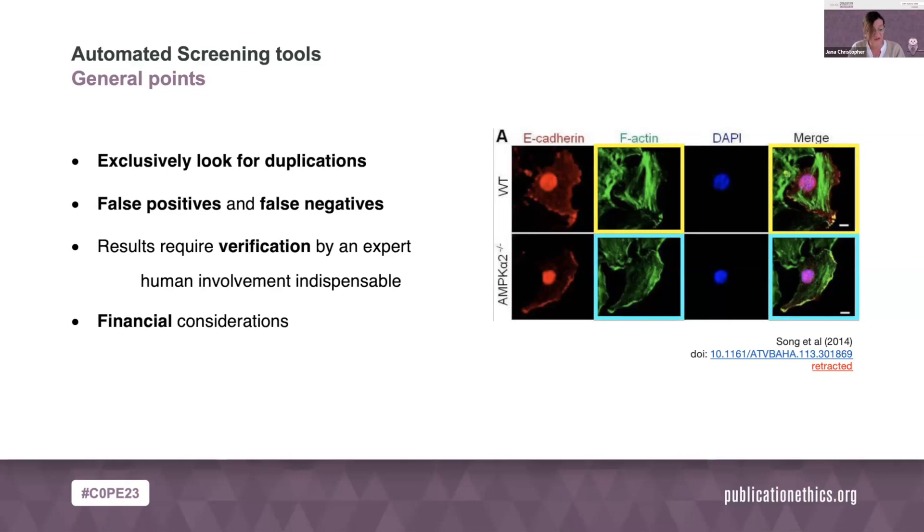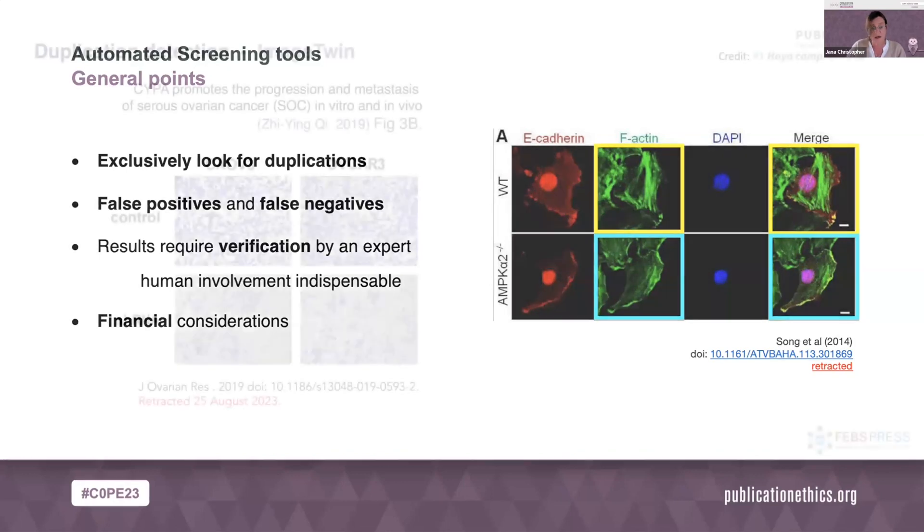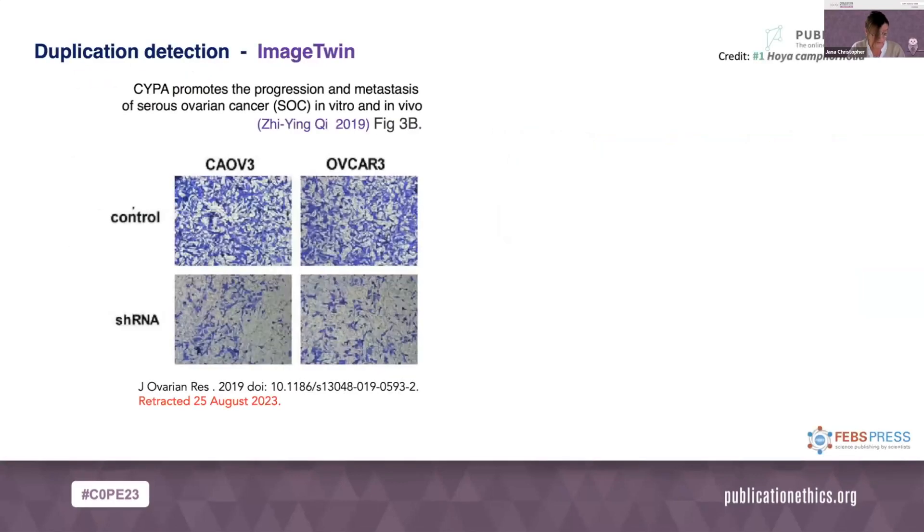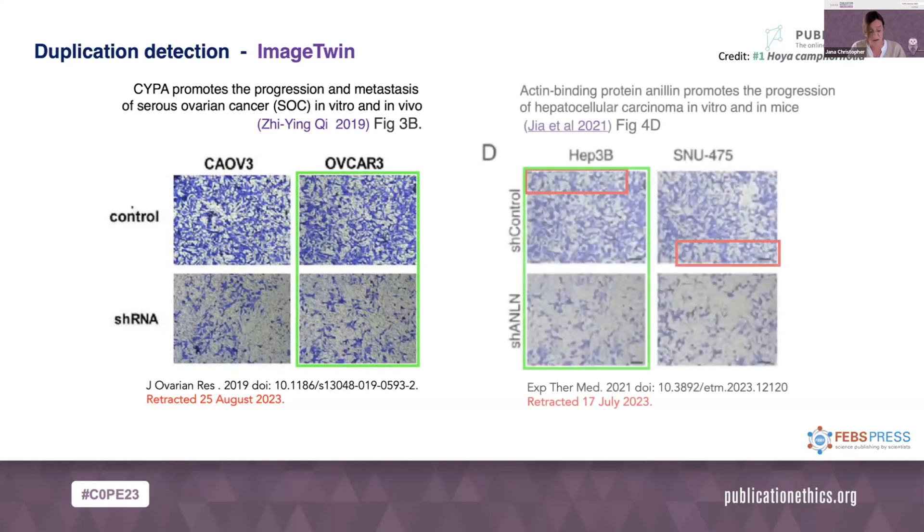I'd like to just show two systems that I use on a regular basis in my own day to day screening. One of them is Image Twin, which has over the past two years become increasingly reliable and is currently still the only system that screens for duplications across the published literature. This feature has proven absolutely essential in the detection and retraction of a large number of paper mill products as the mills use stock images, which will reappear in multiple papers representing different experiments. You can see here that the same images were used in two different papers. Image Twin is very swift and surprisingly robust to resizing, flipping, rotating, changing in color and also resolution, as you can see in this case.